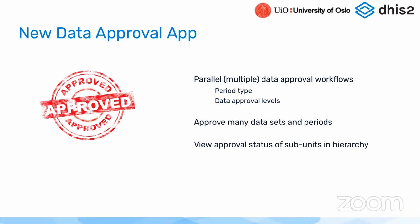We've also made improvements when it comes to viewing the status of approval within the hierarchy, so you don't have to click through everything to see it — you can see it directly from the org tree, as you'll see in a moment.